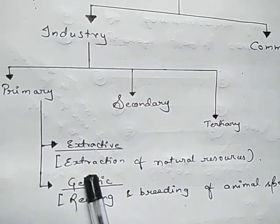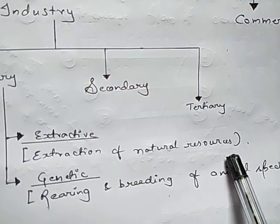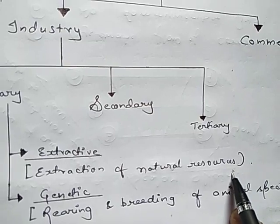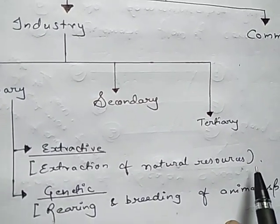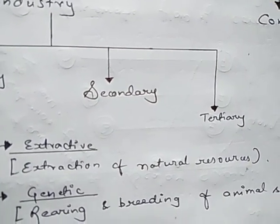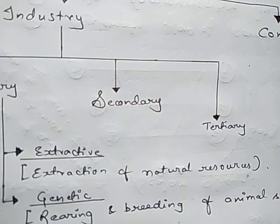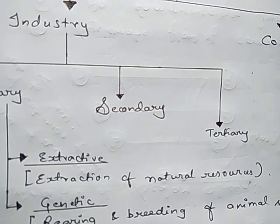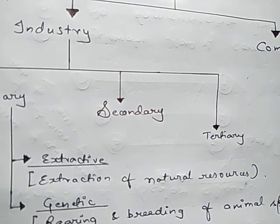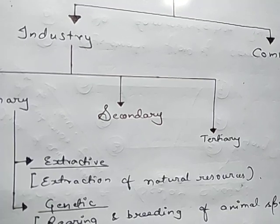The first sub-type of primary industry is extractive industry, in which extraction of natural resources takes place. For example, we extract fish from rivers and seas, we take out wood and timber from forests, and we do mining to take out minerals from the earth. In extractive industry, we don't produce anything — we simply extract natural resources. Mining and fishing are key examples of extractive industry.